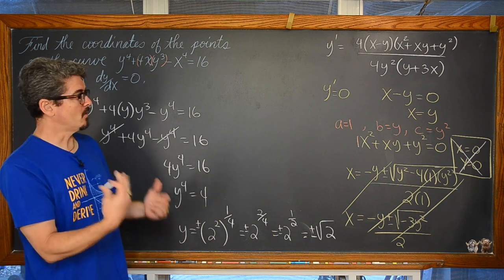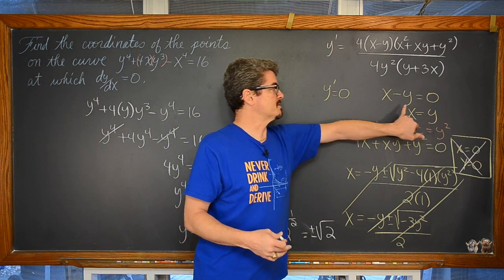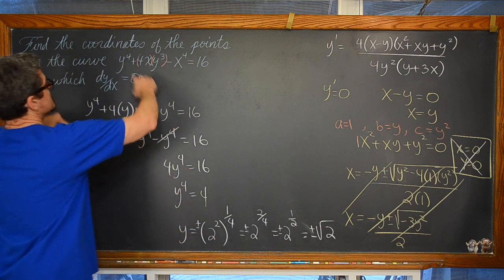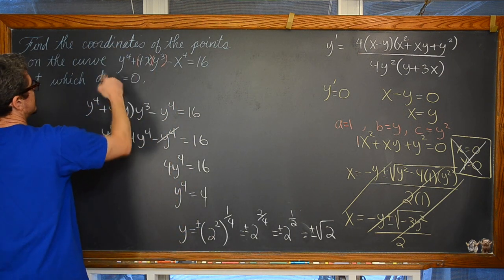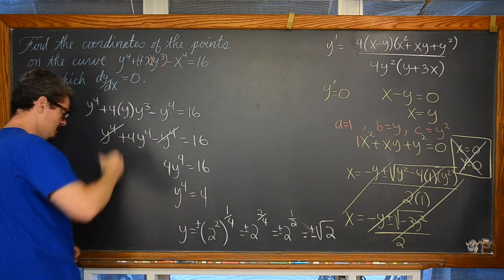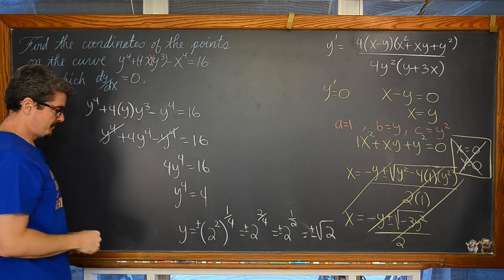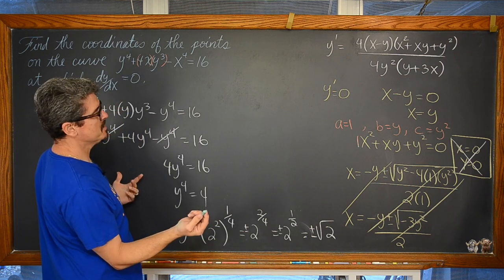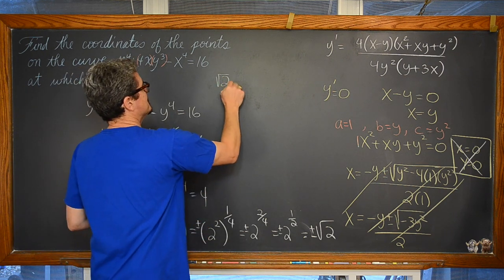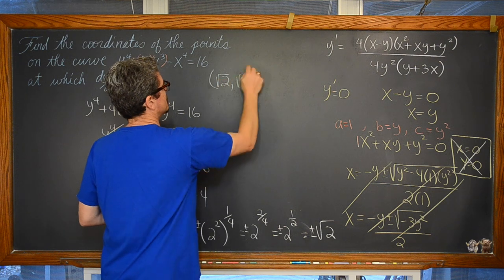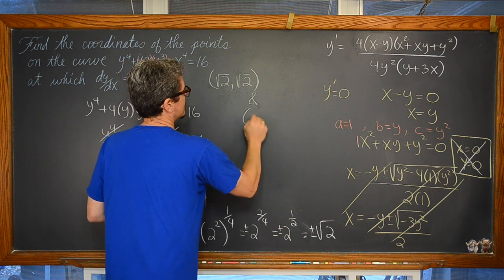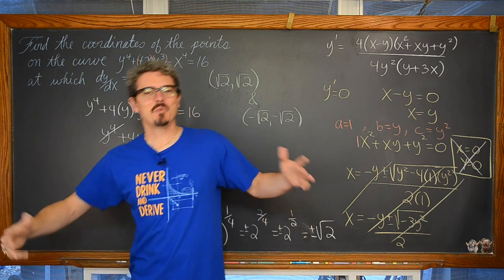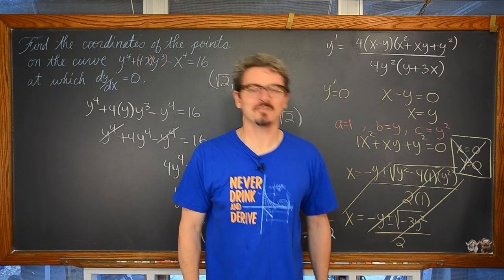Since we took an even root — a fourth root — there is the possibility of both a positive and a negative answer, so y equals plus or minus the square root of 2. Since the only way for the derivative to equal zero is if x and y are equal, our final answers are the points (square root of 2, square root of 2) and (negative square root of 2, negative square root of 2). I am Mr. Tarrou. Bam! Go do your homework!